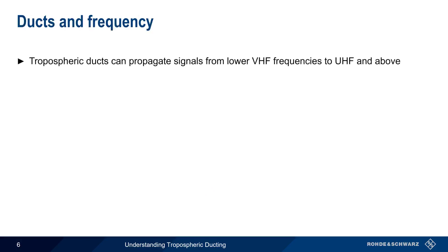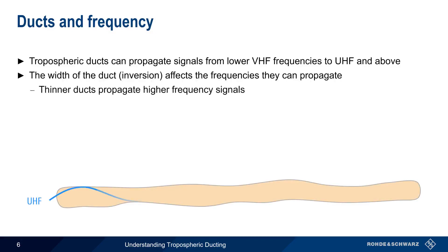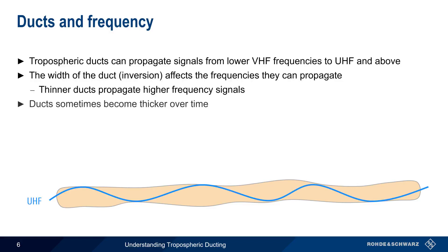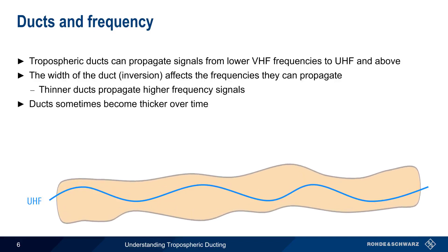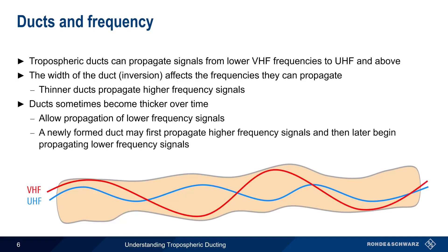Tropospheric ducting can propagate signals with frequencies from the lower VHF range up to UHF and higher. Similar to the way a waveguide works, the width of the inversion or duct determines the frequencies that can be propagated through it. The thinner the inversion layer or duct, the higher the frequency of signals that it can propagate. It's not uncommon for ducts to become thicker over time, allowing propagation of lower frequency signals — so a newly formed duct may begin propagating only higher frequency signals, and then later begin propagating lower frequency signals.